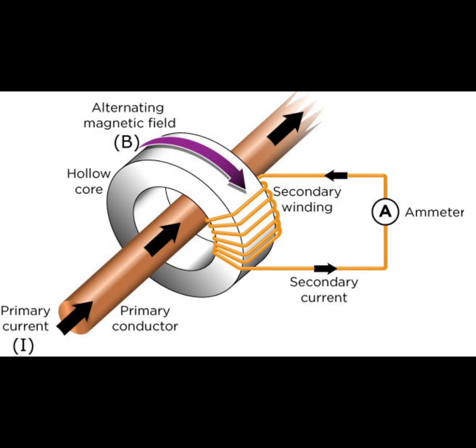The alternating current flowing through the primary generates a corresponding alternating magnetic field in the core. This in turn induces an alternating current in the secondary winding as it is coiled around the magnetic core.